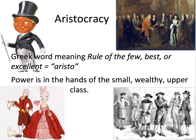The next type is an aristocracy, and it is the Greek word meaning rule of the few, best, or excellent — 'aristo.' Power is in the hands of the small, wealthy upper class, and they're usually very highly educated. At this point they have usually removed the king because they think that they can do a better job. Please take a moment to highlight: power in the hands of the small, wealthy upper class.